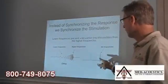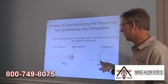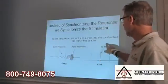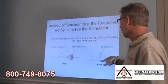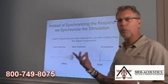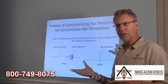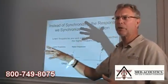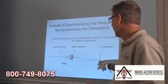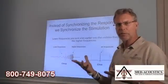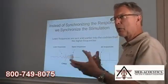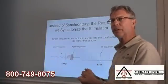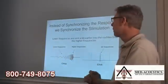Here's the difference between a click and a chirp. In a click, all the frequencies are applied to the cochlea at once. Lower frequency components have to travel further, higher frequency components travel less, and we get an asynchronous or dis-synchronous firing.